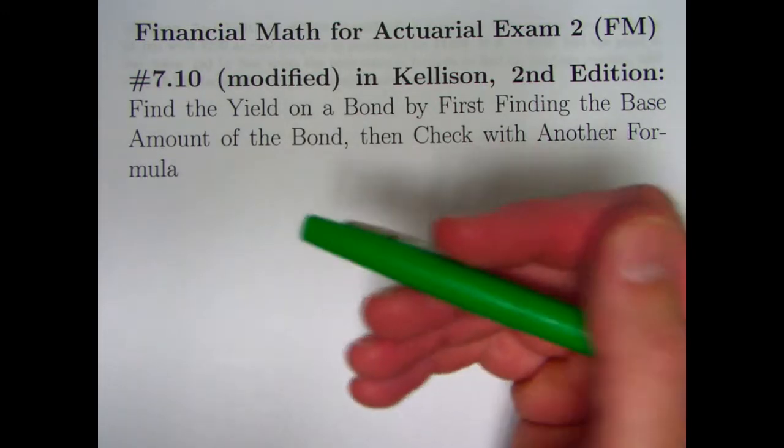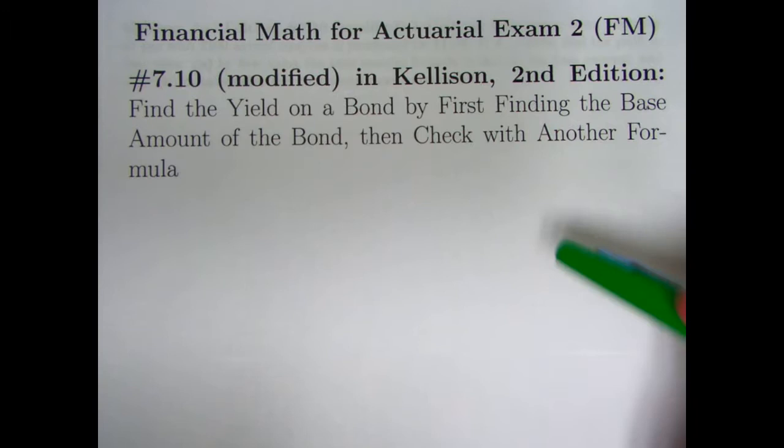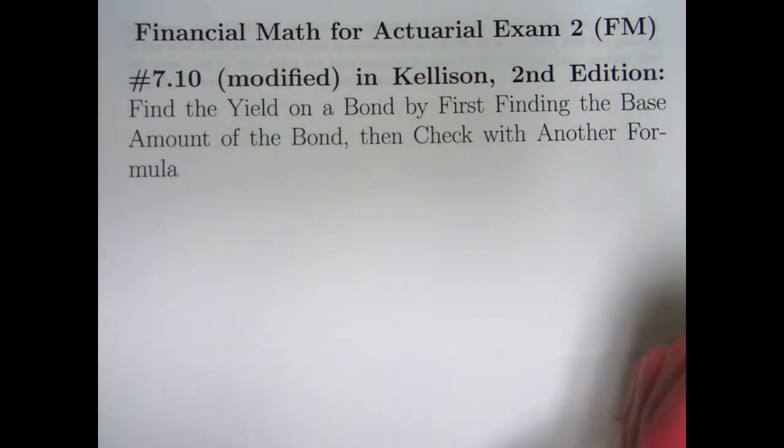We will be finding the yield on a bond in an unusual way by first finding the base amount of the bond to ultimately get the yield. Then we will also check the answer with another formula.